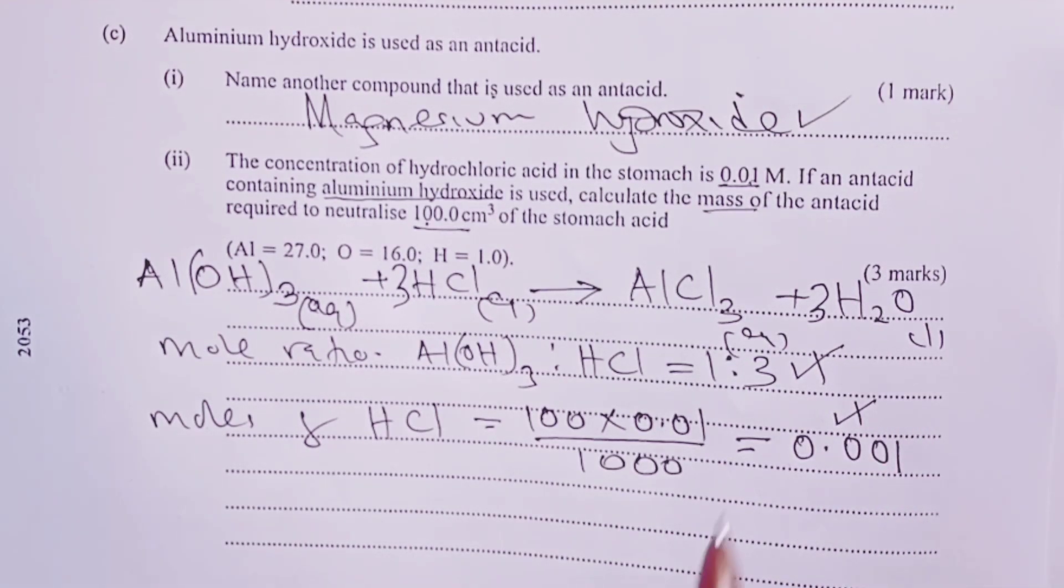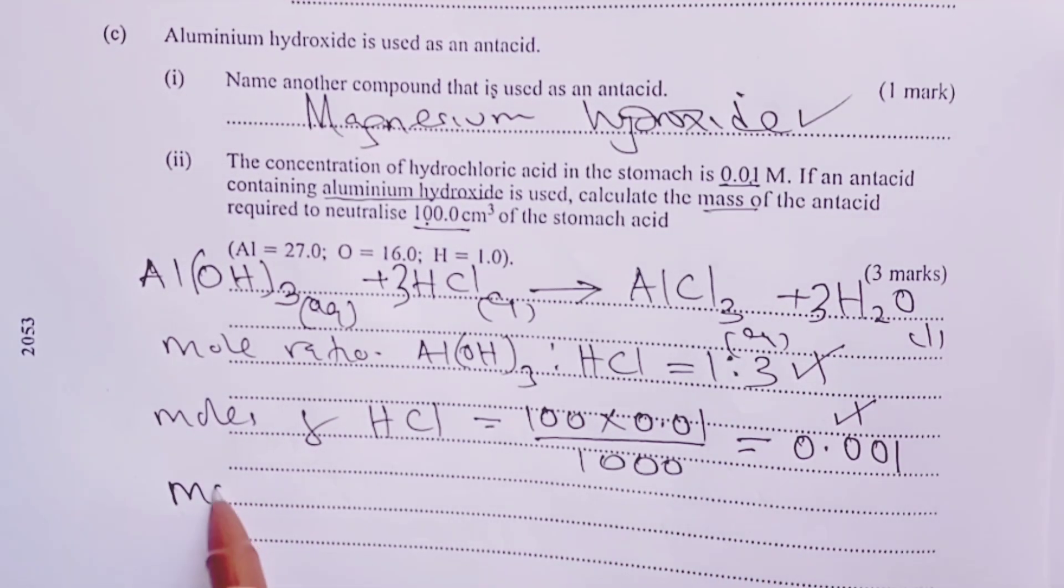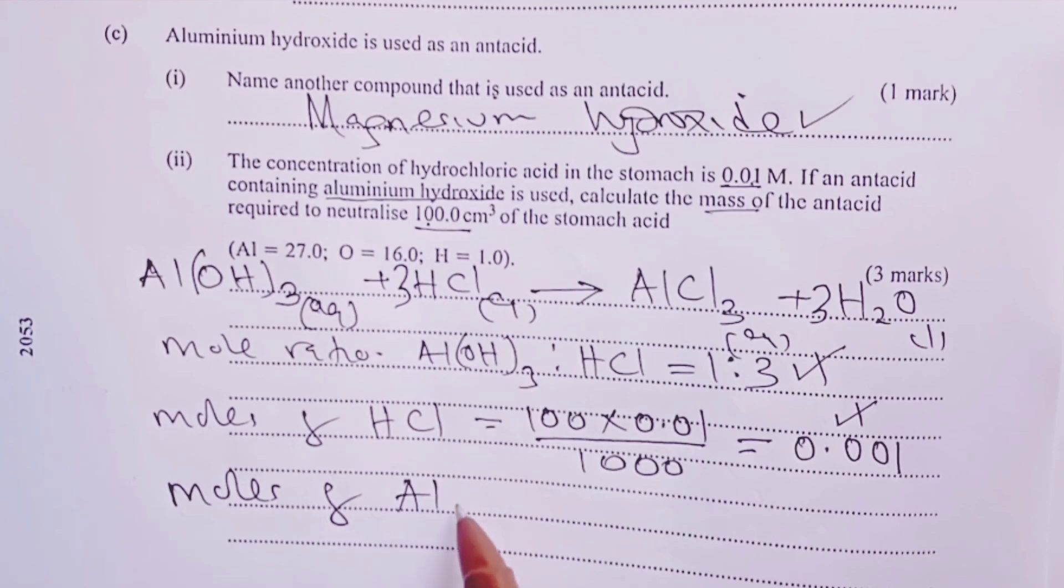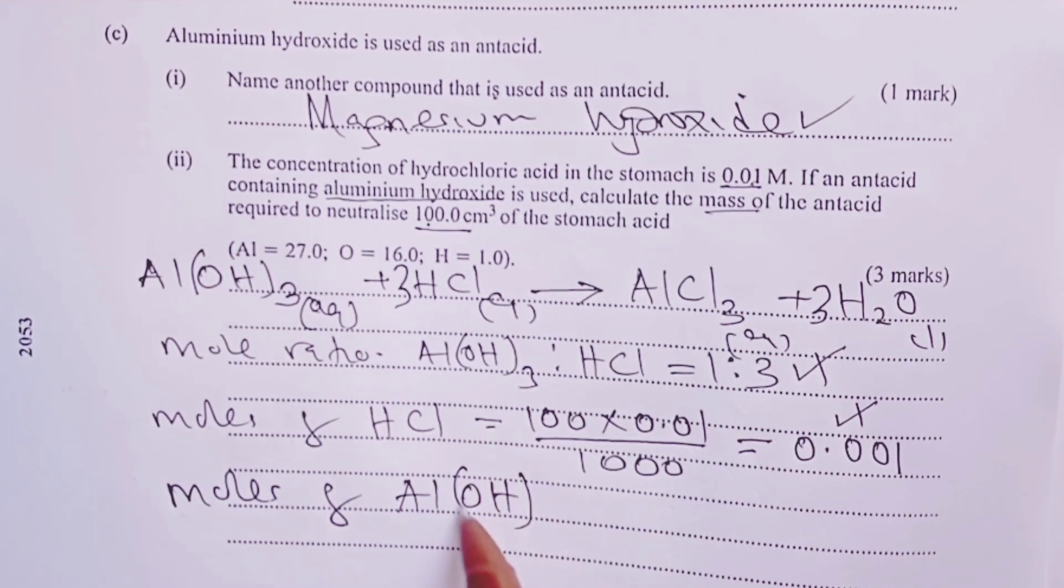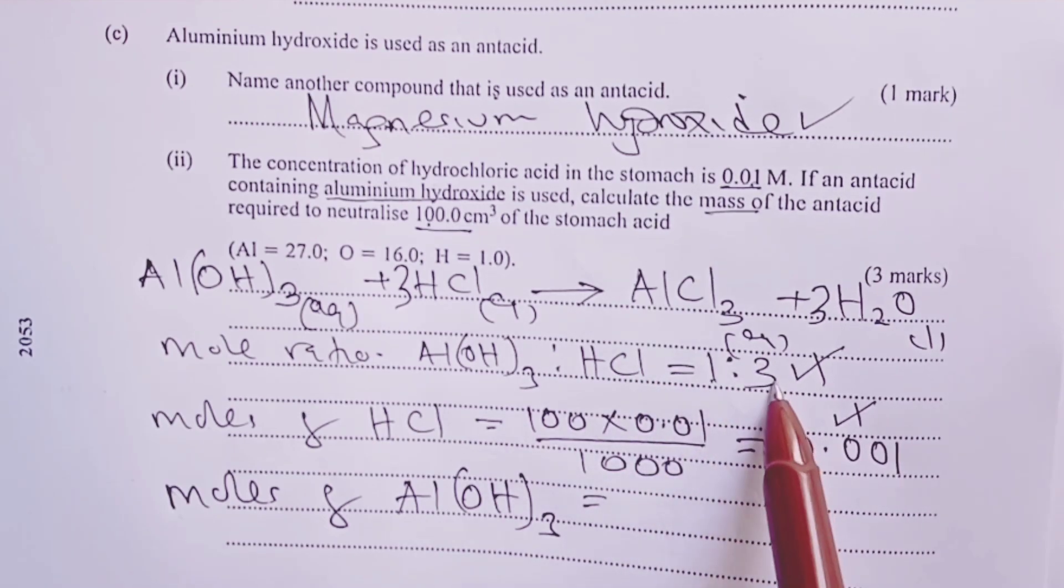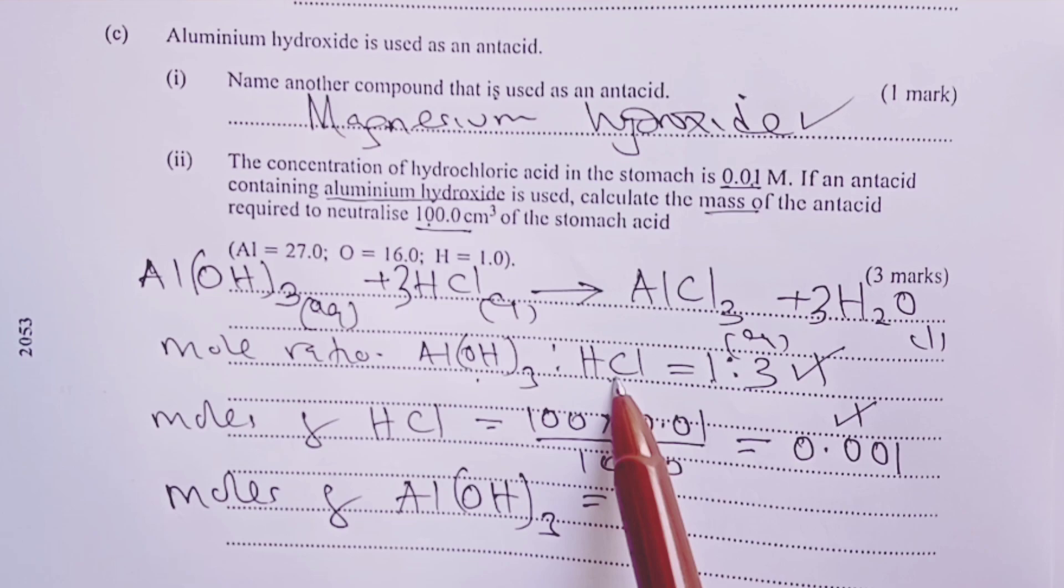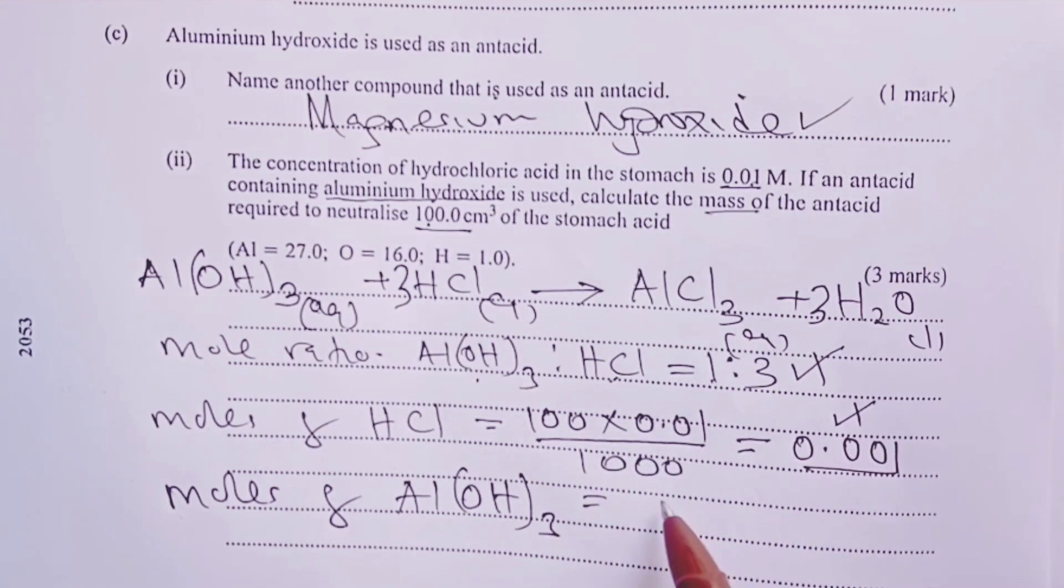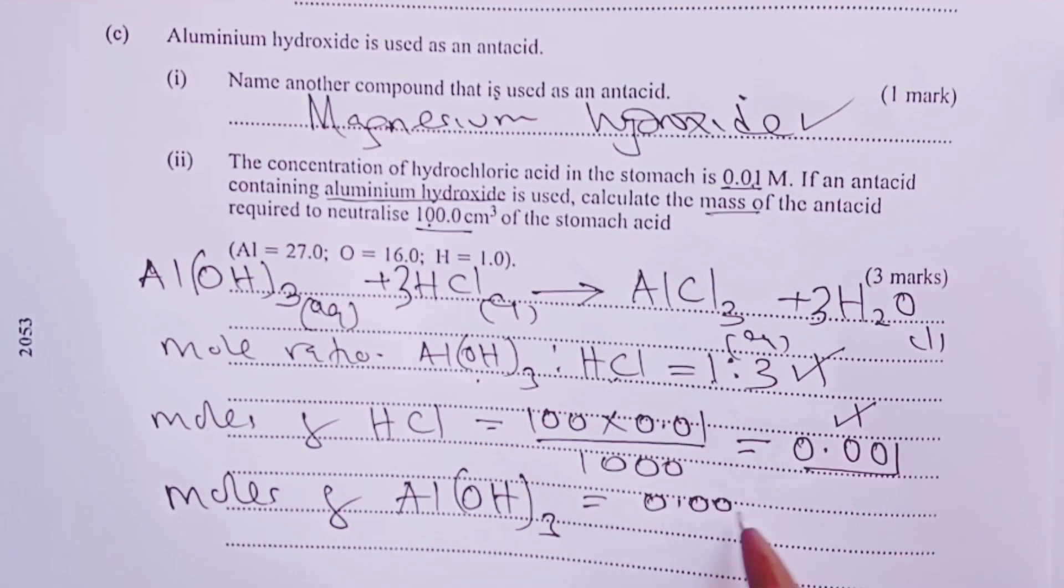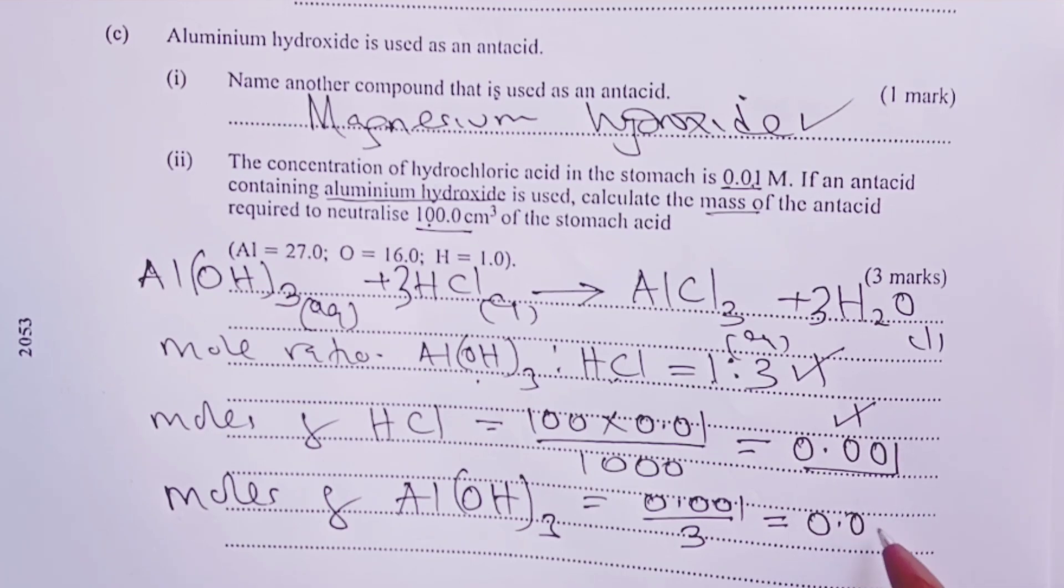From here, we are now supposed to use the mole ratio to get moles of aluminium hydroxide. Because mole ratio is 1:3, 1 for aluminium hydroxide for every 3 of hydrochloric acid, this answer here, we shall divide by 3 to get moles of aluminium hydroxide. That would give us 0.00033.